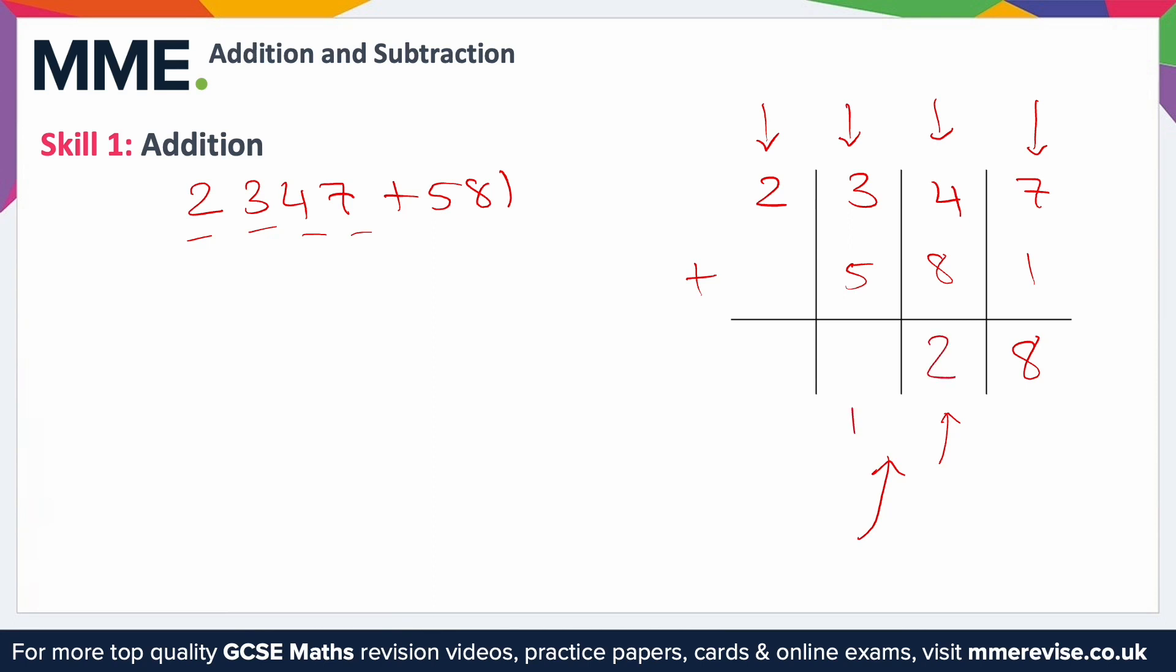And that's just to remind me I'm carrying over the one, or effectively the ten, from the previous column. Then I've got three plus five—that's eight—but don't forget the one that I'm carrying over. Eight plus one is nine, so I'll put a nine in here. Then I've got two plus nothing, so two plus zero effectively, which is just two.